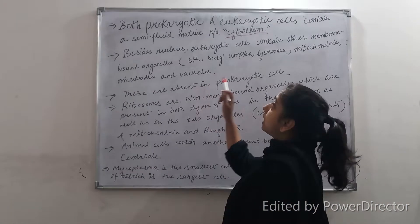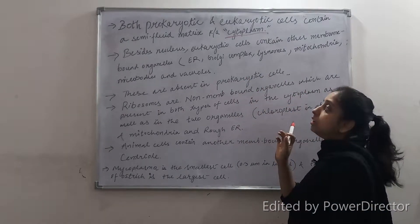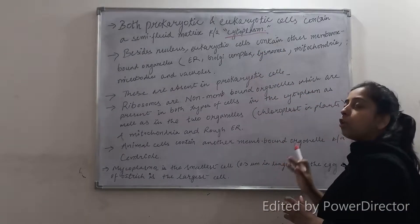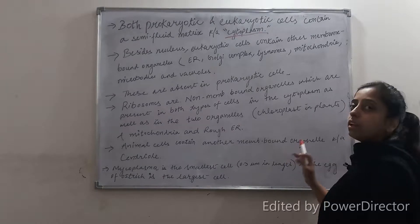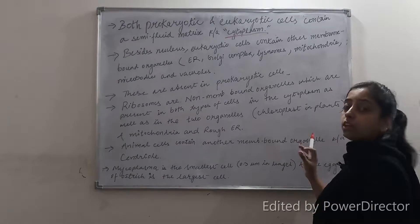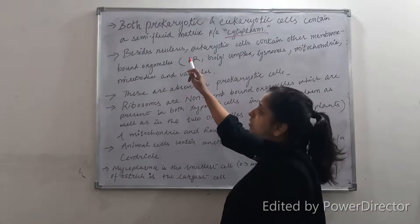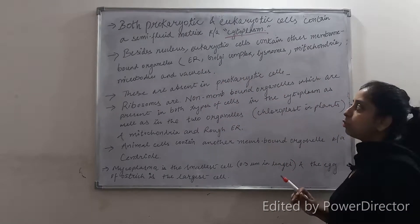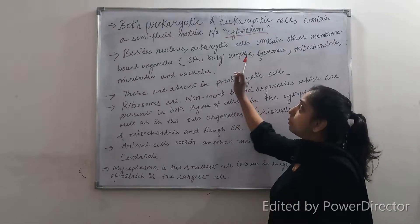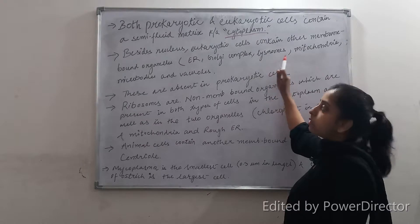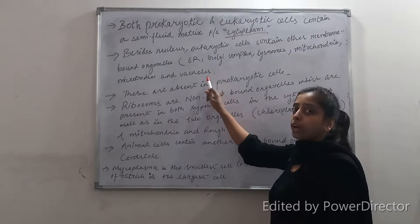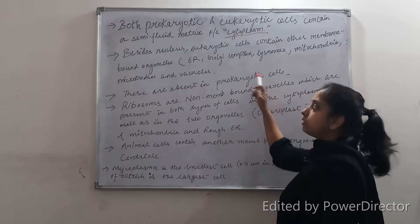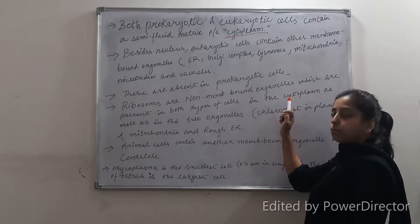Both prokaryotic and eukaryotic cells contain a semi-fluid matrix called the cytoplasm. Cytoplasm fills the cell — it occupies the volume of the cell and it is the main arena of all cellular activities. It contains various enzymes. Besides the nucleus, eukaryotic cells contain other membrane-bound organelles, which include the endoplasmic reticulum, the Golgi complex, lysosomes, mitochondria, microbodies, and vacuoles. Vacuoles are present in plant cells. These membrane-bound organelles are absent in prokaryotic cells.